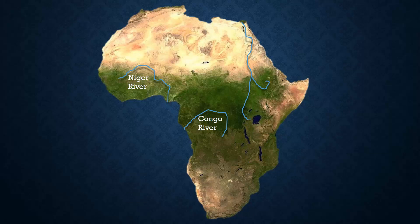The next physical feature is the Nile River. The Nile River is the largest river in the world and runs south to north on the east side of Africa. Another physical feature we will be talking about is Lake Victoria. Lake Victoria is located towards the eastern part of Africa at the end of the Nile River.